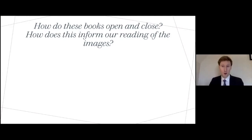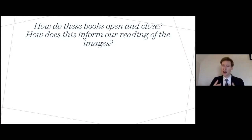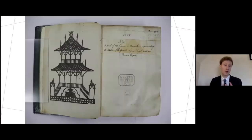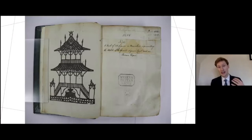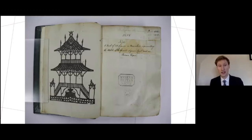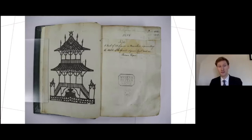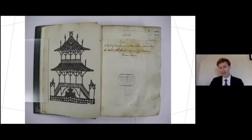Thinking about how these books open and close and how this might set up our reading, I'll focus on the Peter Mundy album, but there are a few others I want to drop in and discuss. Here we see the Sloane album, now in the British Museum, part of Sir Hans Sloane's own collection, dated 1622. It begins with this wonderful cut-paper motif of a kiosk — the only cut-paper motif in this album — and it sets the stage for a procession of characters that are to come.